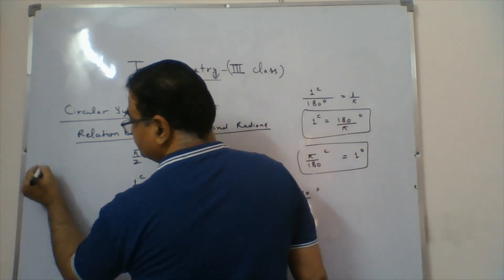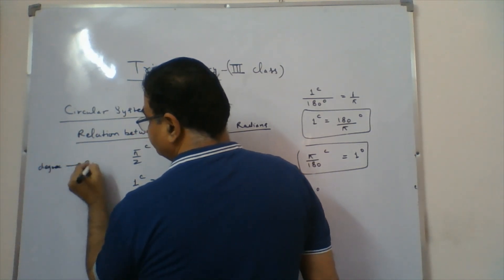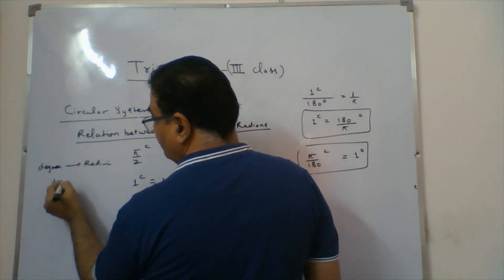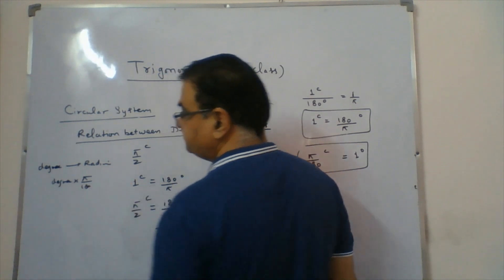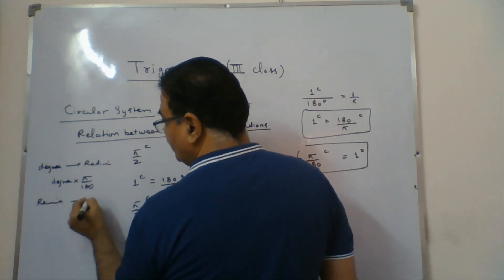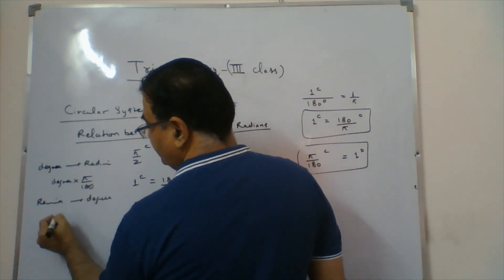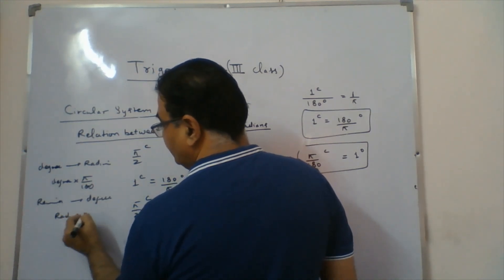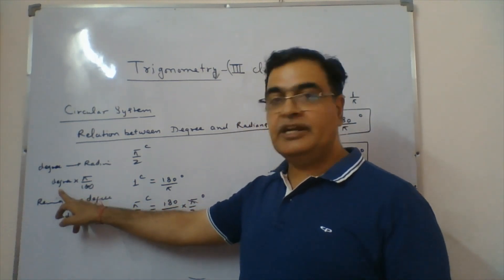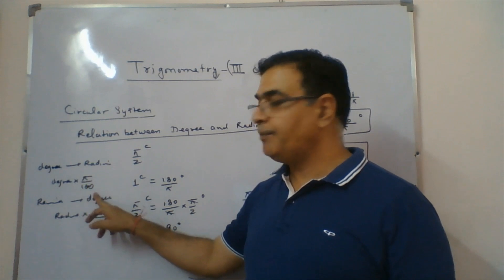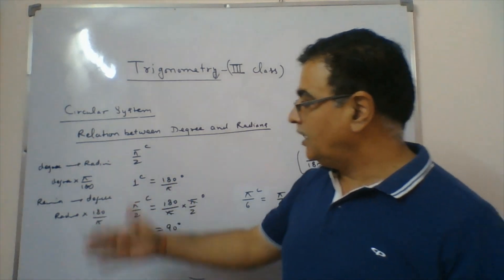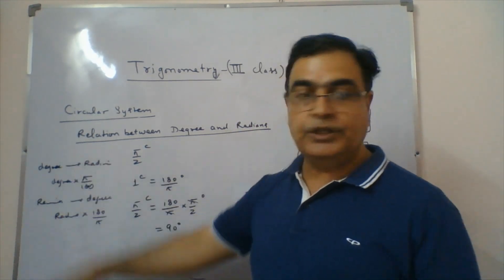So to summarize: to convert degree to radian, multiply by π/180. To convert radian to degree, multiply by 180/π. This concept you should remember — whenever a degree angle is given and you want radian, multiply by π/180; whenever radian is given and you want degree, multiply by 180/π.